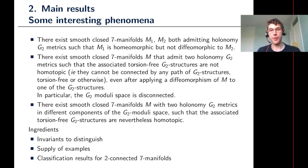These classification results work best — are easiest to prove — in the two-connected setting, meaning you work with seven-manifolds that are simply connected and whose second homotopy group also vanishes. Luckily, the twisted connected sum and extra twisted connected sum constructions are capable of producing a lot of two-connected examples.